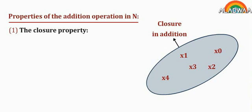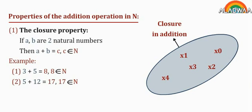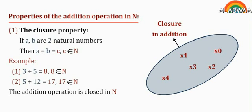Properties of the addition operation in N. Property 1: the closure property. If a and b are two natural numbers, then a plus b equals c, which is also a natural number. For example, 3 plus 5 equals 8, and 8 belongs to the natural numbers. Also, 5 plus 12 equals 17, and 17 also belongs to the natural numbers. Therefore, the addition operation is closed under the set of natural numbers.